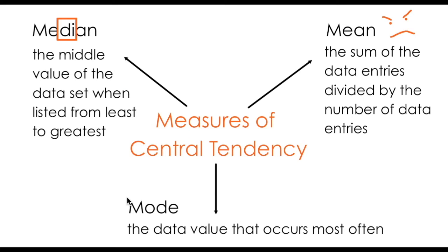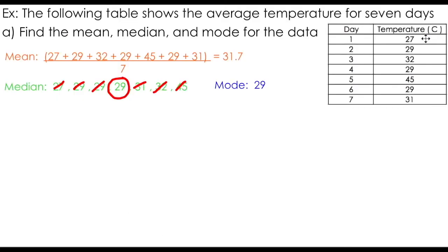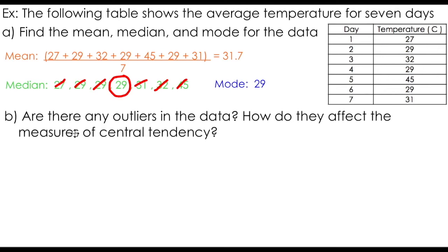The mode is usually the easiest to find. We simply look for the data value that occurs the most often. In this table of seven days, you can see that for three of those days, we had a temperature of 29 degrees. Therefore, we say our mode is 29 degrees Celsius.